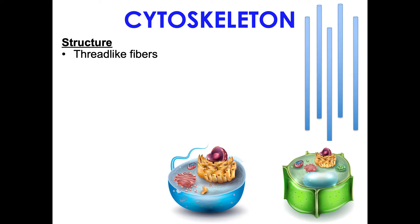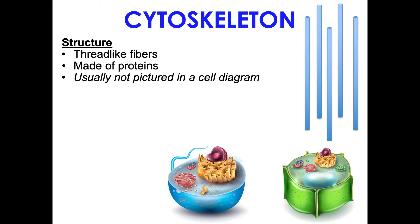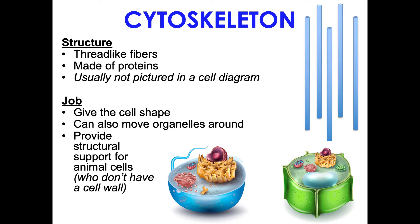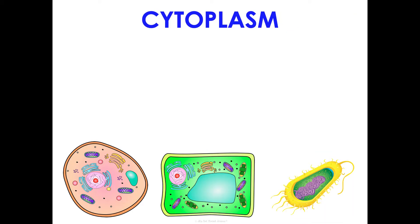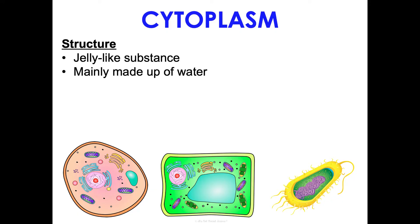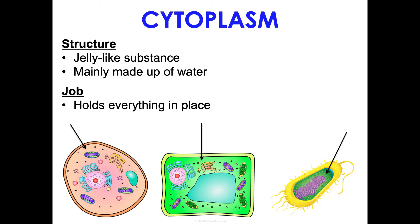The cytoskeleton consists of thread-like protein fibers that give the cell its shape, help move organelles around, and provide structural support — especially important for animal cells since they lack a cell wall. Think of it like a skeleton: your bones give you structure and shape, just as the cytoskeleton does for the cell. The cytoplasm is a jelly-like, mostly water substance that holds everything in place and is found in plants, animals, and prokaryotic cells.